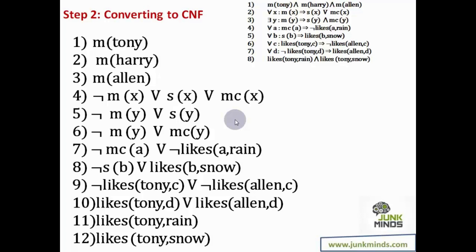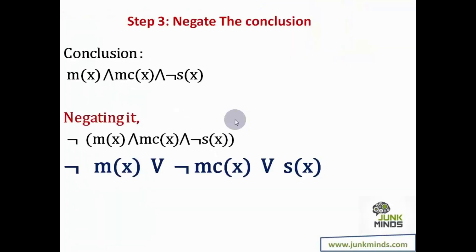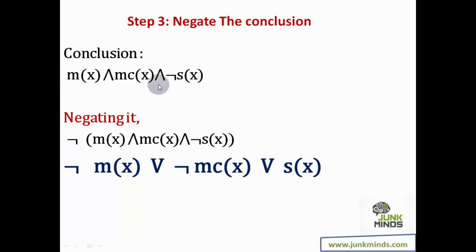Now it is high time you start solving these questions on your own and not rely on the solutions provided. Step three is to negate the conclusion. We need to check: is there a member who is a mountain climber but not a skier? I cannot use this statement directly in resolution because it is not in CNF, and step four always needs statements in CNF. So I convert it to CNF first.